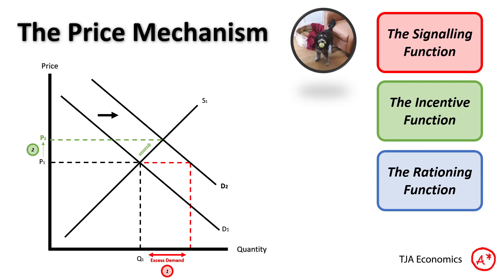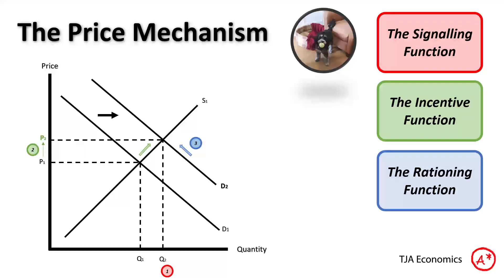And then of course, because they've put their prices up, that will ration off the good or service to those people who want it the most. The higher price means that some consumers are no longer willing and able to buy that product, and therefore some consumers will leave the market. All of this results in a new equilibrium price with a lower quantity.